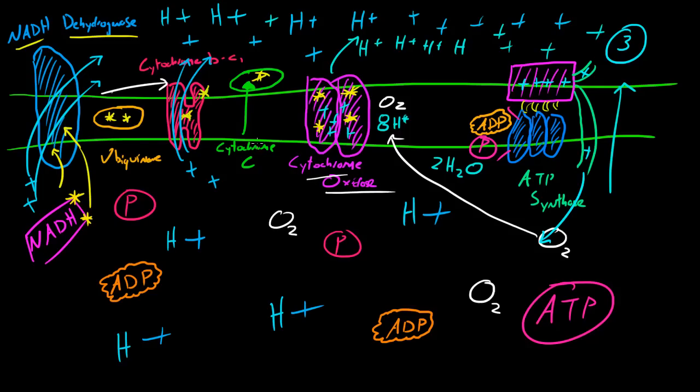So what happens is the cytochrome C, which is the bus, takes them one at a time. This is important, actually. One at a time, back and forth, taking passengers from the cytochrome BC1 to the cytochrome oxidase. So now...